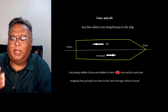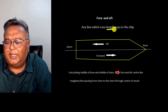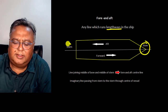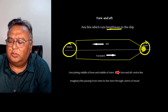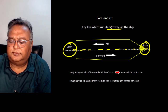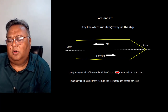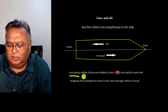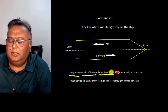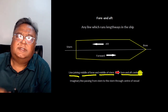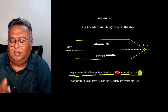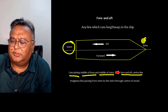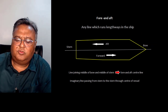Now let's talk about the for-and-aft line. The for-and-aft line is the line which runs lengthways, that is along the length of the ship. This dotted line joins the midpoint of the bow and midpoint of the stern — this is the forward and aft line. It is also called the for-and-aft centerline. This is an imaginary line passing from the stem to the stern.